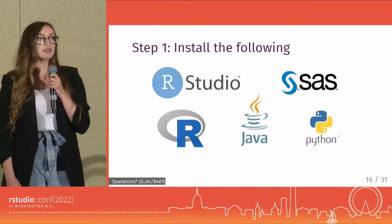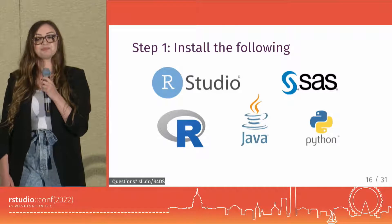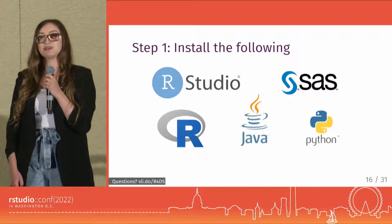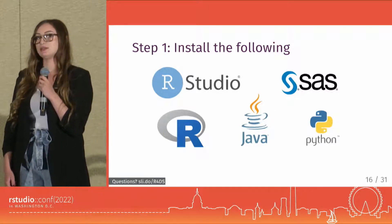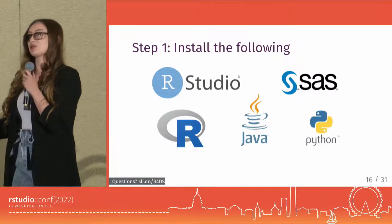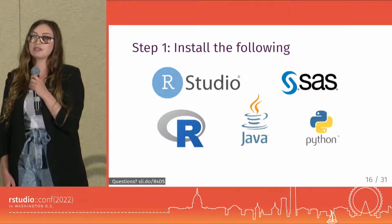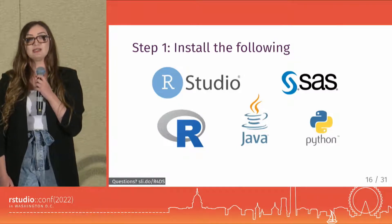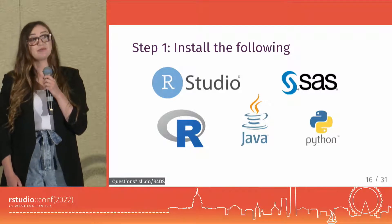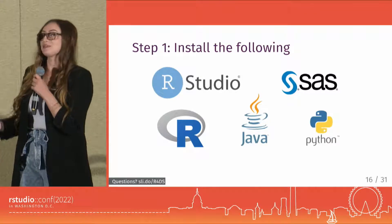Step one of this recipe is to gather your required ingredients. For this particular recipe, the required ingredients are the languages that you're interested in using, plus Java. And the other ingredient — really the most important one for making this recipe succeed — is admin privileges. If you don't have admin privileges on your computer, you might not be able to get this recipe to work.